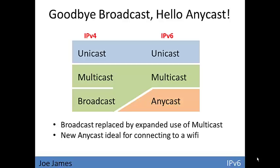A new function in IPv6 is Anycast. IPv4 did not support Anycast. Many mobile devices need to connect to Wi-Fi and don't care which access point they connect to, so they send out a broadcast to get a reply from any wireless router available — that's what Anycast does. IPv4's broadcast is basically replaced in IPv6 by expanded use of multicast, which can broadcast to many destinations on the network without affecting every host, making it more efficient and reducing network contention.